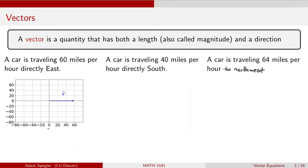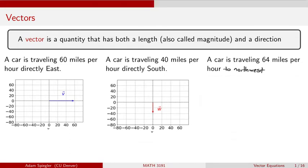For a car driving 40 miles per hour directly south, we would draw a vector whose magnitude, whose length is 40 units, and now this is pointing directly down towards the south.